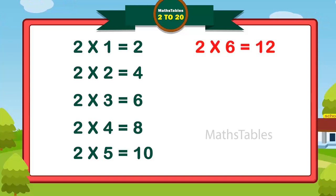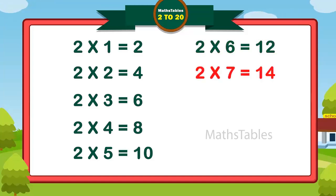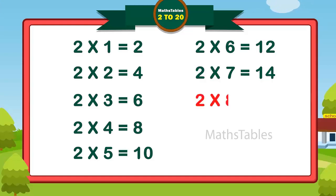Two sevens are fourteen. Two sevens are fourteen. Two eights are sixteen. Two eights are sixteen.